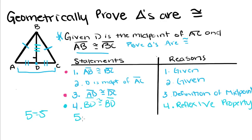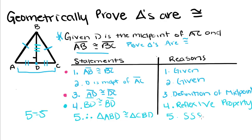For our last step, we can say: therefore, triangle ABD is congruent to triangle CBD by side-side-side. That's how we always finish our proof — by saying therefore the triangles are congruent, or therefore the parallelograms are congruent, or something like that.